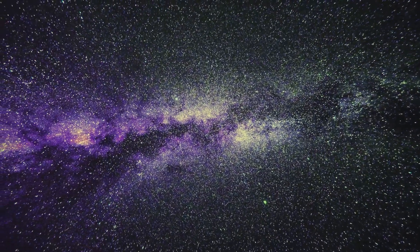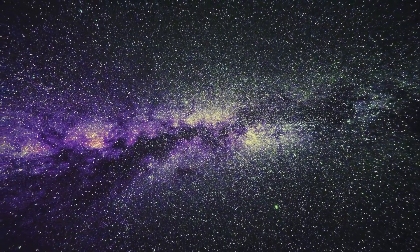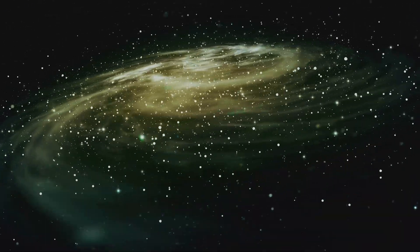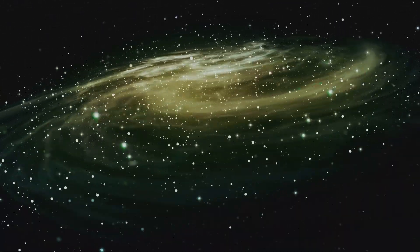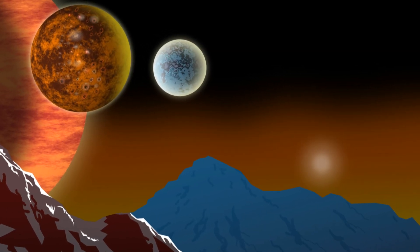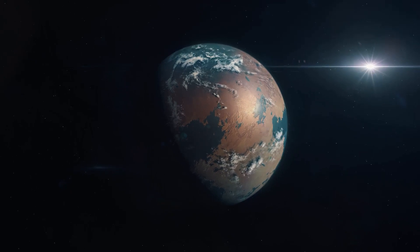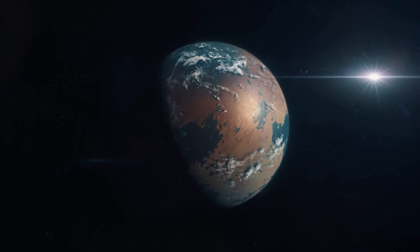The universe in its vastness holds countless stars and even more planets. Each star a sun, potentially with its own system of planets orbiting around it. Some of these planets we are now discovering might be similar to our own Earth. They could have the right conditions to support life as we know it.